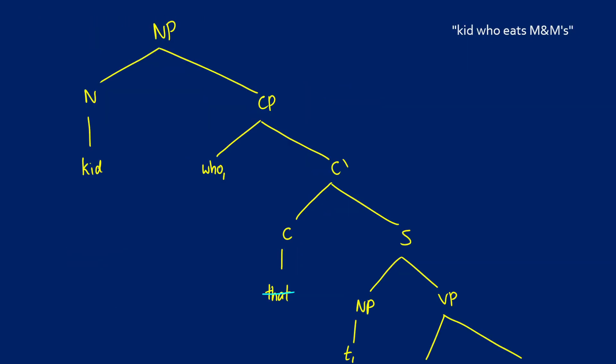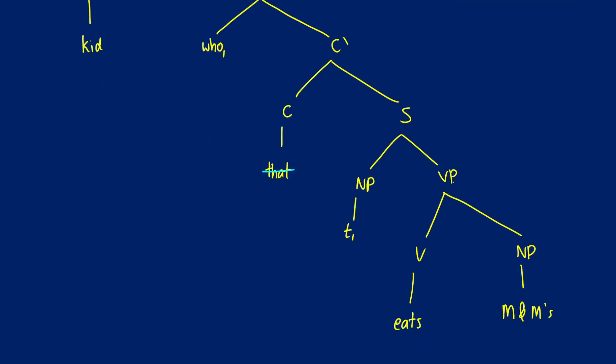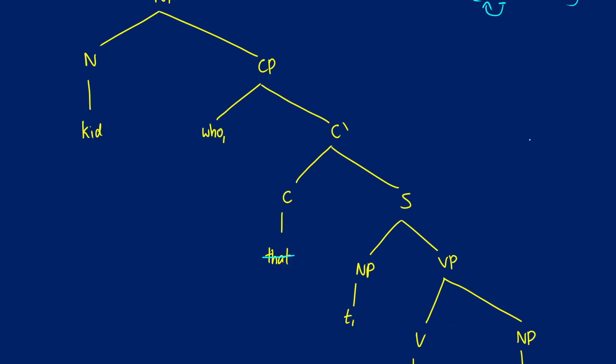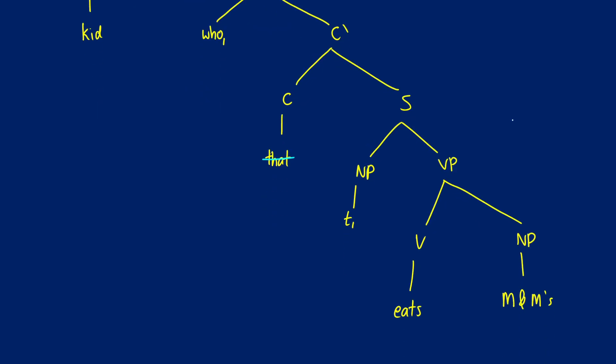So I want to show you another example for "kid who eats M&M's" just to do the whole thing. And this is a little bit different because we have subject extraction. So this is "kid" and then we have "who eats M&M's" with the subject being moved up. So "kid who eats M&M's," let's start from the bottom.